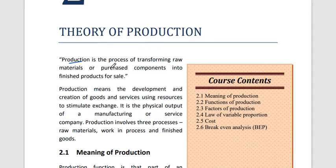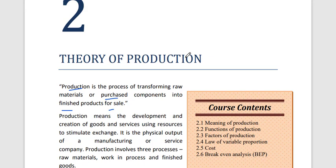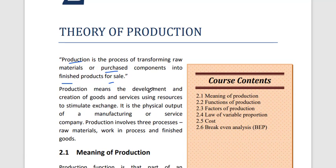Production means the process of transforming raw material or purchased components into a finished product for sale. For example, if I want to sell a mobile phone, I will first buy mobile parts, then process those parts by converting them into one complete mobile phone, and then sell it. So production means industrial production — we produce something for the purpose of sale.